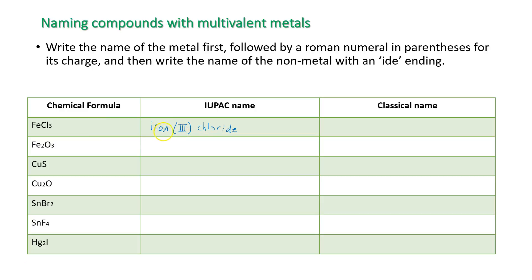If the iron had a charge of 2 instead, I would put a 2 in parentheses. There are 2 ways of naming this. The modern system is known as the IUPAC naming system, but there's a classical system as well that's been used in the past and is still used at times. I'm going to explain how to name compounds using the classical system.